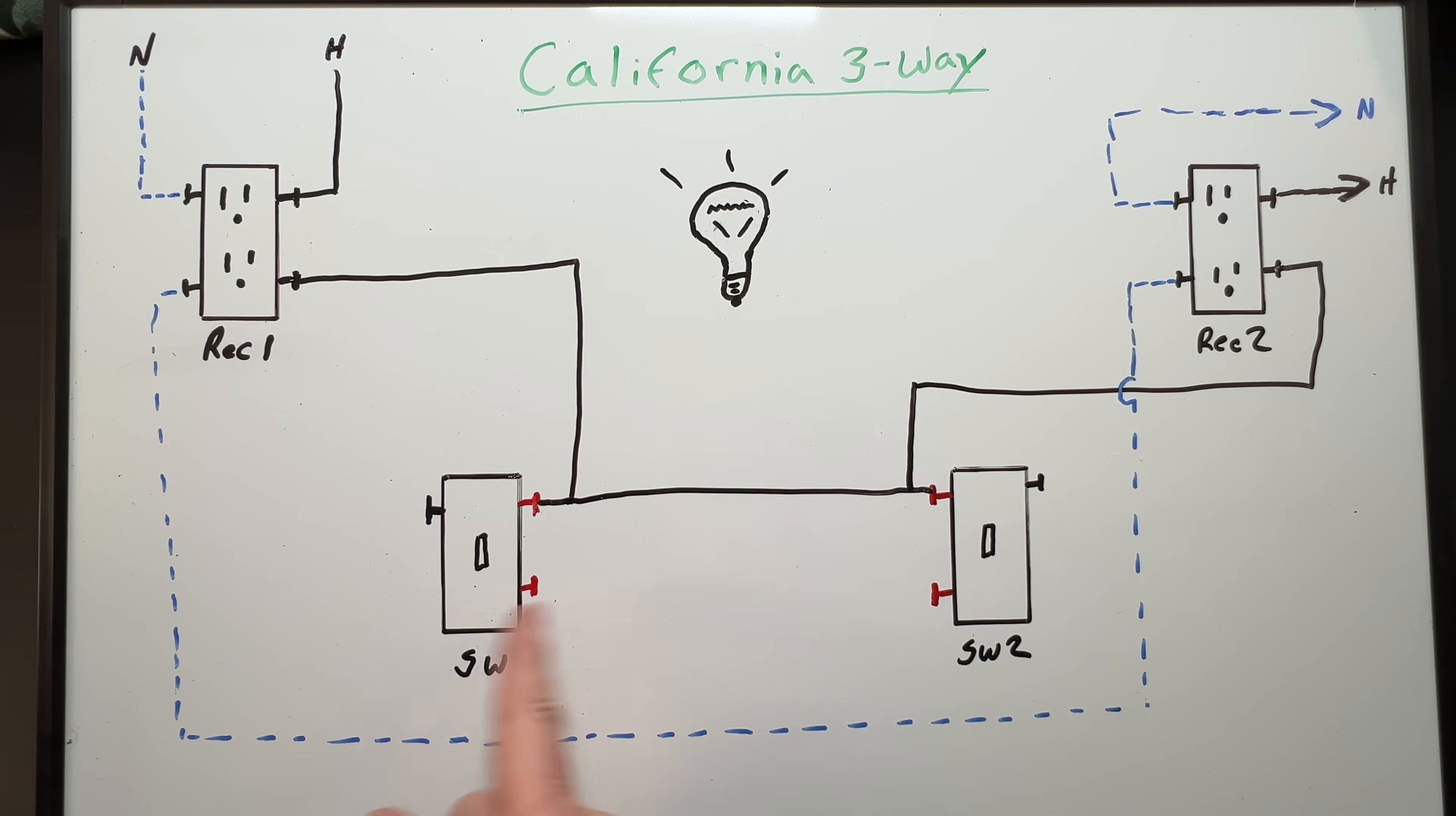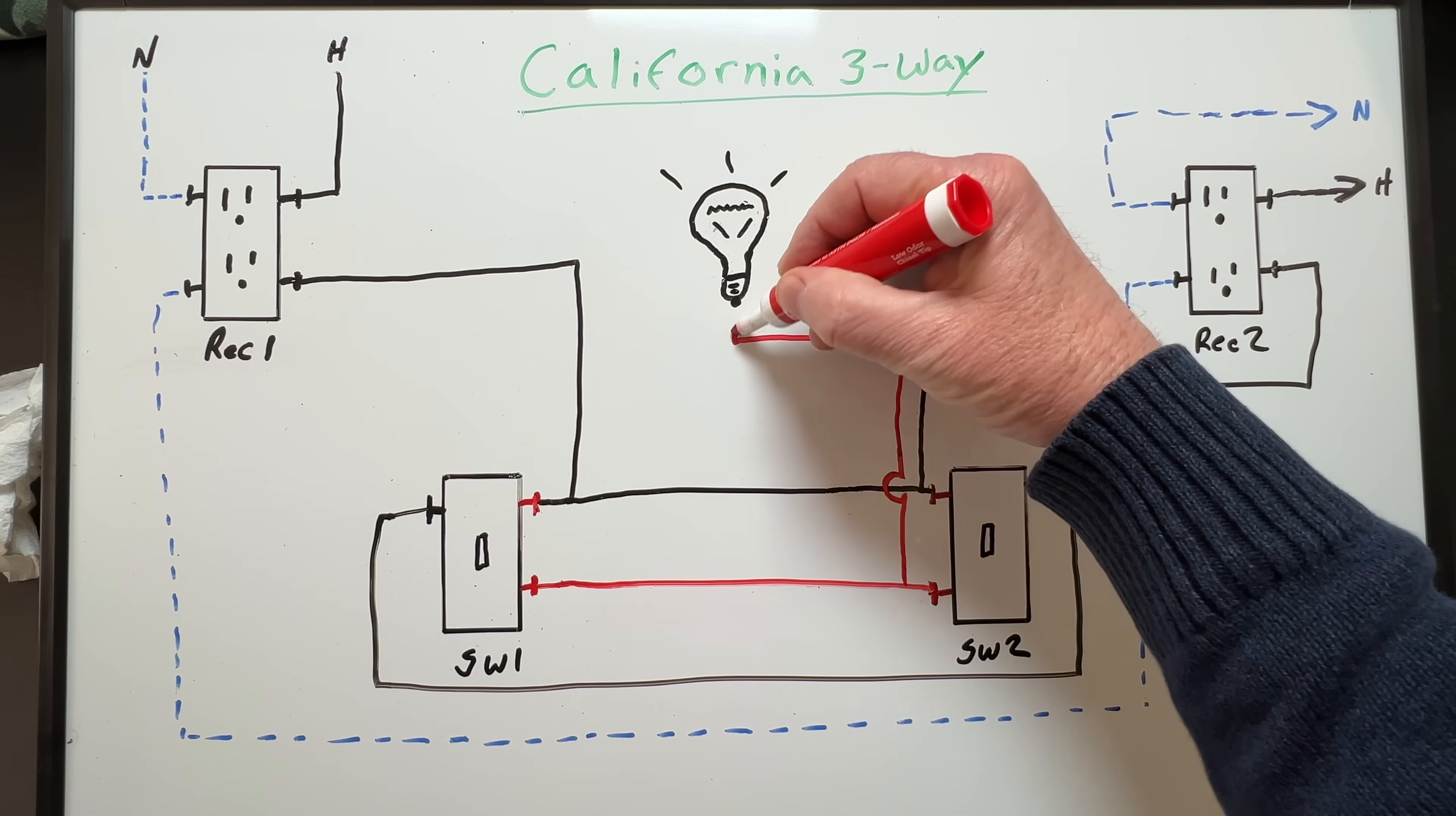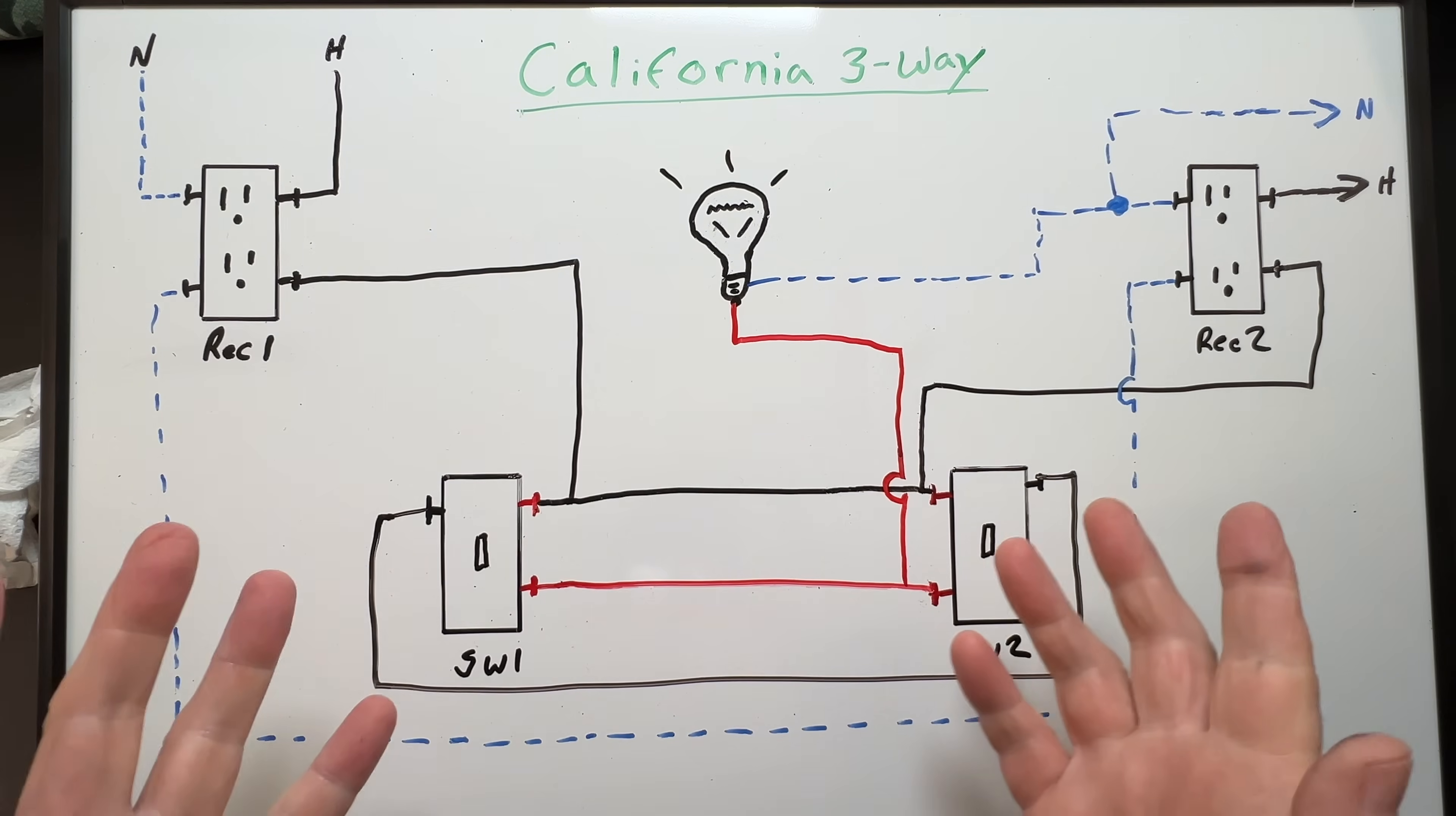Now we need to connect our light switches and our light. We'll take a red wire from the traveler screw on switch one over to the traveler screw on switch two. Now we're going to take a black wire from our common screw on switch one across to the common screw on switch two. Bear with me, this is all going to make sense in a minute. Next, we'll take a red switch leg wire from our traveler screw on switch two up to the black hot lead on our light. Then our white neutral wire will extend from receptacle two over to the white lead on our light. And of course, each location will have ground wires as well. And that's it. Our wiring is done.